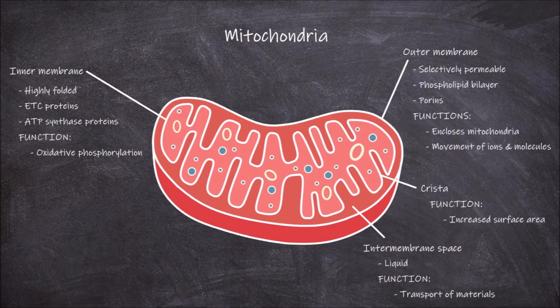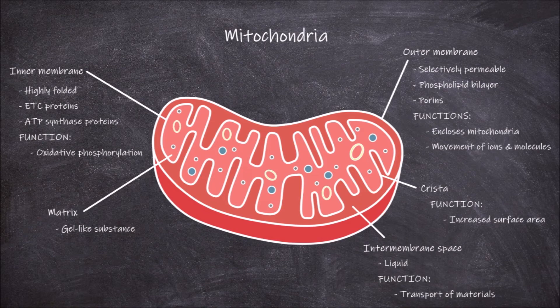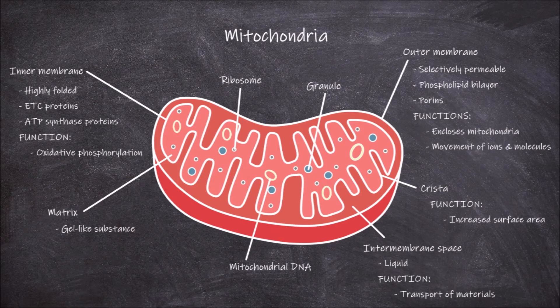Inward from the inner mitochondrial membrane is a space called the mitochondrial matrix, or just the matrix. The matrix has a gel-like consistency and contains a concentrated mixture of enzymes required for the link reaction and Krebs cycle portions of respiration. It also contains granules, ribosomes, and other molecules.